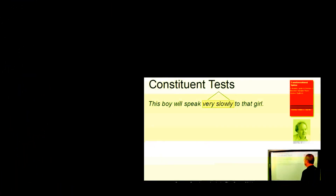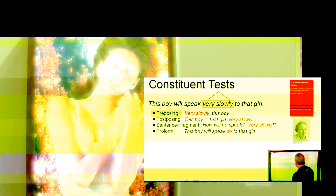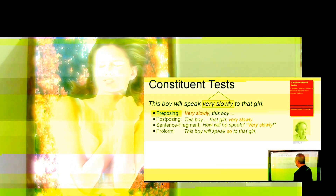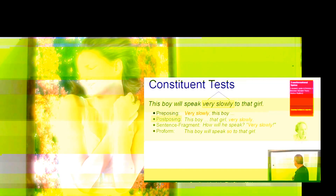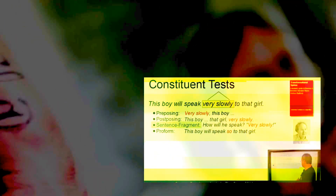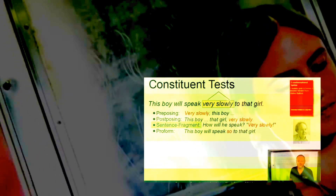Let's quickly outline the reasons for our decision. We said that we can pre-pose it: 'Very slowly, this boy will speak to that girl.' Or that we can post-pose it: 'This boy will speak to that girl very slowly.' We can also use 'very slowly' as a sentence fragment — 'How will he speak? Well, very slowly.'